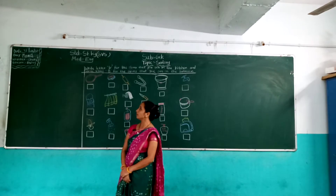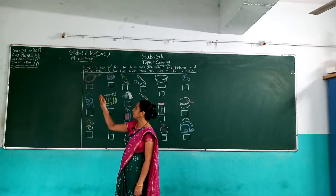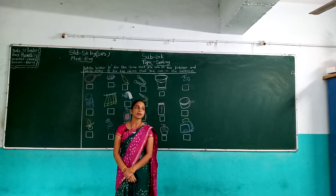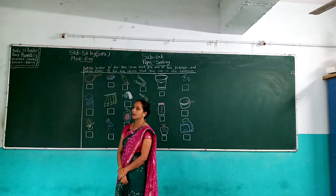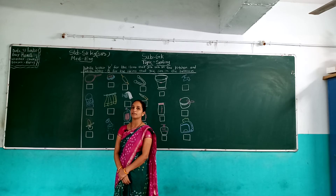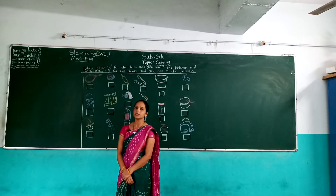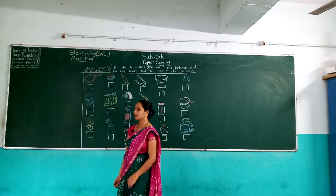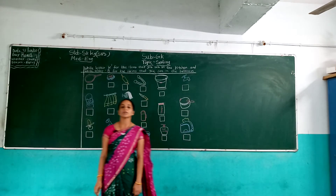Which day? 31 August 2020. Which day? Monday. How's the weather outside? Cloudy. Which season is going on? Rainy. Okay.